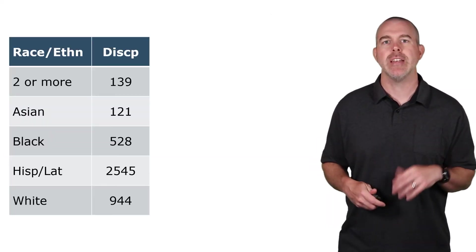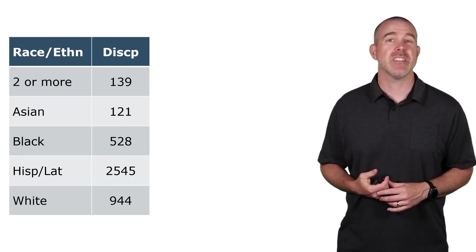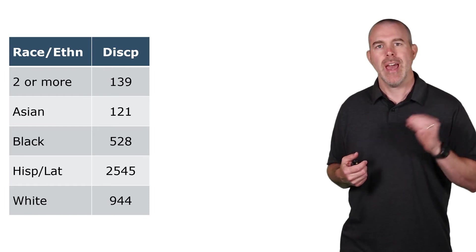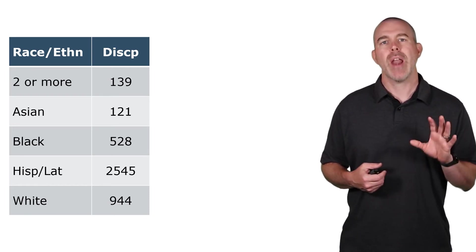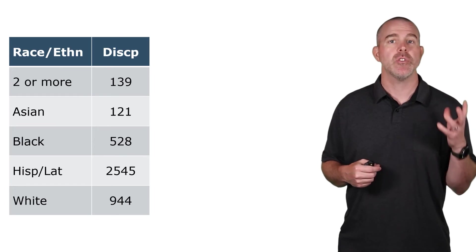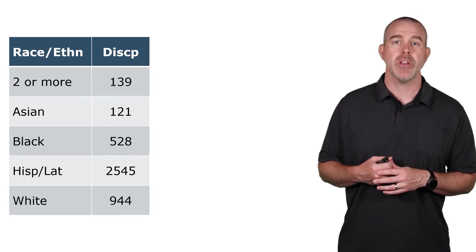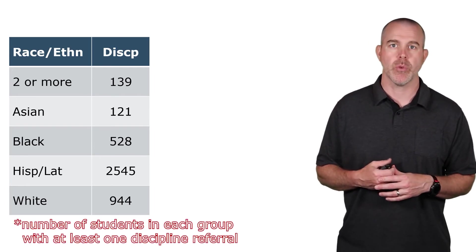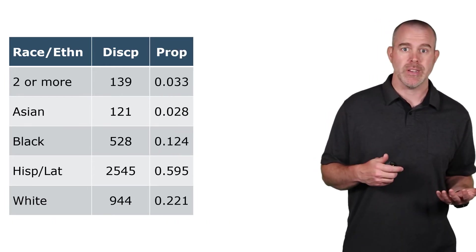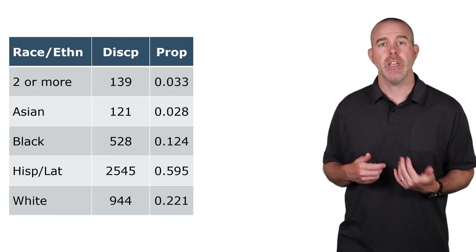All right. I want to finish with a little more serious example. I want to go back to that discipline data. We've analyzed this a variety of different ways. I want to show you yet another way to analyze this. What I have here is I have a column, and I have the race or ethnicity, and I have the counts, the total number of discipline referrals for each of the groups. We can then find the proportion of those disciplined. So here are of those disciplined, here are these proportions.